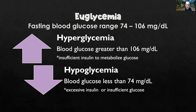Hyperglycemia is blood glucose greater than 106, and this is due to insufficient insulin to metabolize glucose. Your client is eating carbohydrates, which are our main source of glucose, but there isn't any insulin — or the body is resistant to that insulin — and it can't be metabolized. Hypoglycemia is the opposite: blood glucose less than 74 milligrams per deciliter, where the client has taken in too much exogenous insulin or they have insufficient glucose intake.